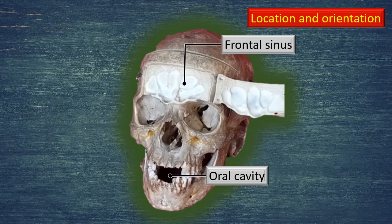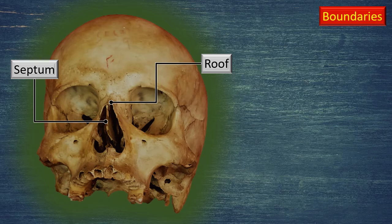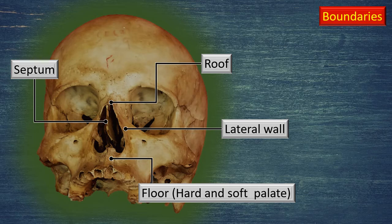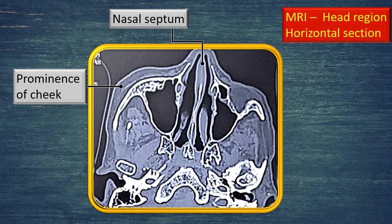Immediately above the external nose, covered by skin, is the frontal sinus. On a beautifully dissected skull with the outer table of the frontal bone removed, you can see how gravitational drainage takes place from the frontal sinus into the cavity of the nose. The oral cavity is located immediately below the external nose. The septum, roof, lateral wall, and floor are the bony components of the external nose.